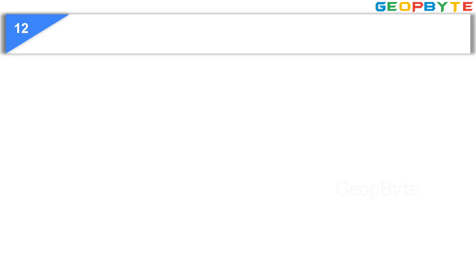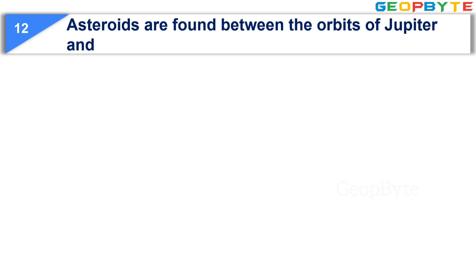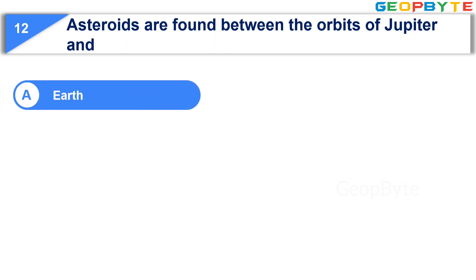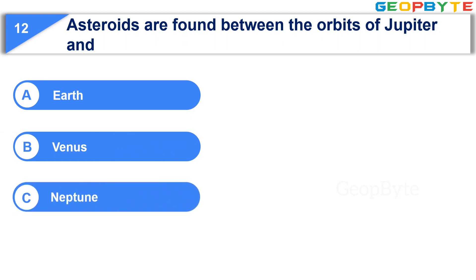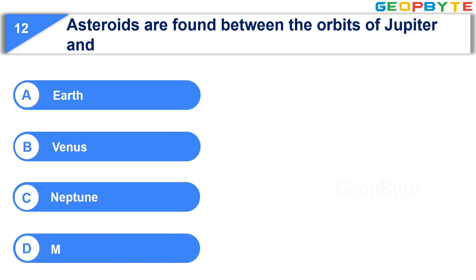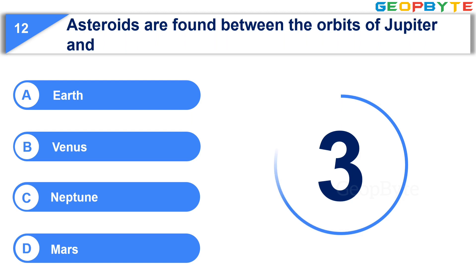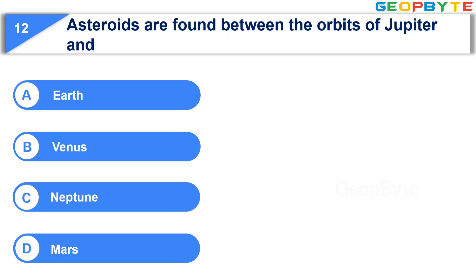Now let us see the twelfth question: Asteroids are found between the orbits of Jupiter and — Option A: Earth. Option B: Venus. Option C: Neptune. Option D: Mars. Your time starts now. Your time is up and the correct answer is Option D: Mars.